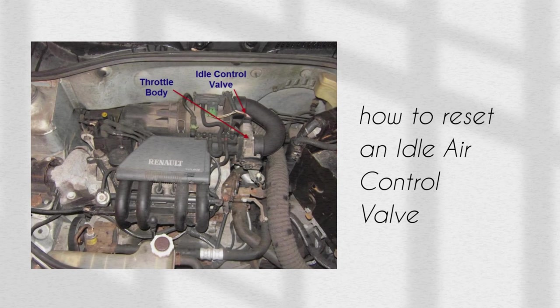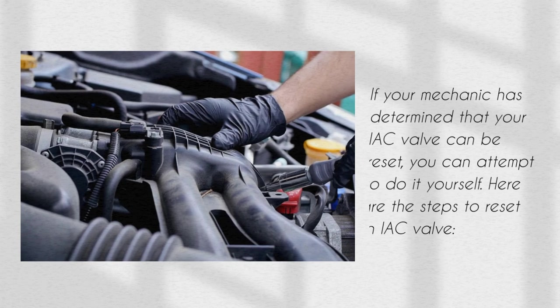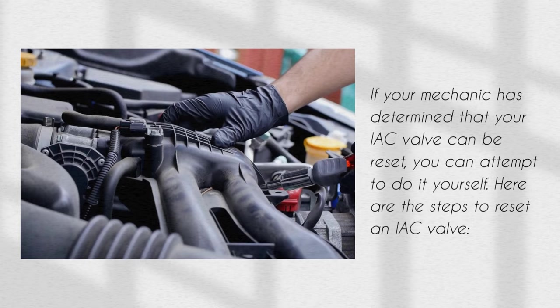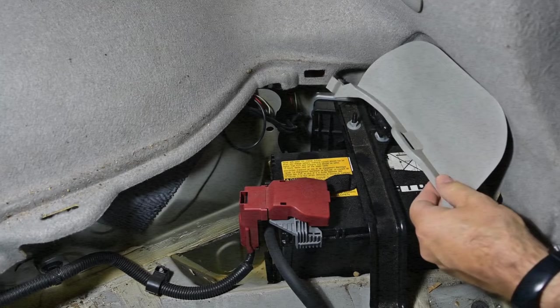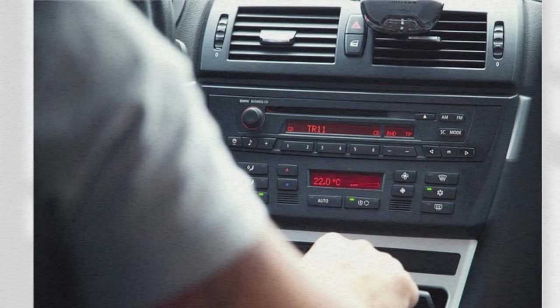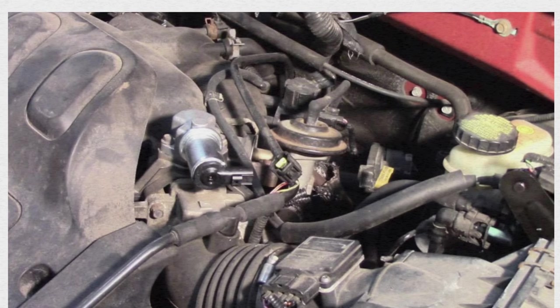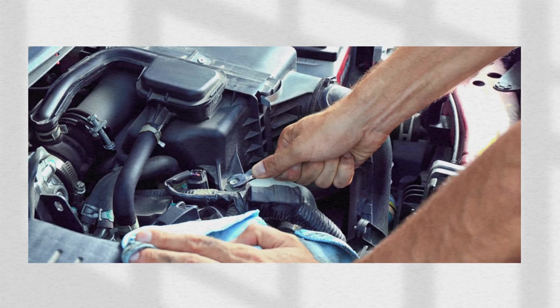So, how to reset an idle air control valve? If your mechanic has determined that your IAC valve can be reset, you can attempt to do it yourself. Here are the steps to reset an IAC valve. Step 1: turn off the engine and disconnect the negative battery cable — this will reset the car's computer and clear any stored codes. Step 2: locate the IAC valve. The valve is typically located near the throttle body and it will have a plug or wire harness connected to it. Step 3: remove the IAC valve from the throttle body — this may require the use of a wrench or socket set.